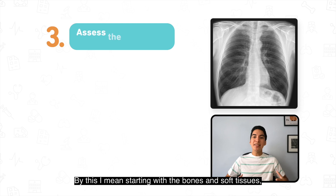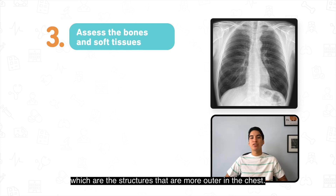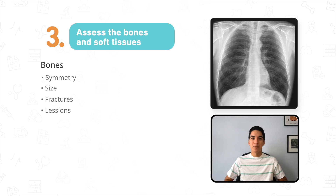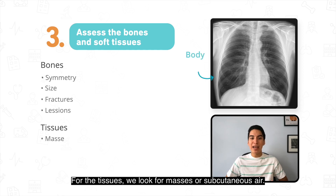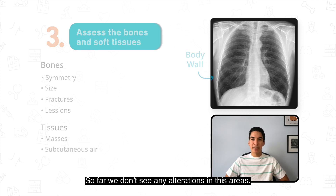After this, I like to start from outwards and go inwards — starting with the bones and soft tissues, which are the structures that are more outer in the chest. We assess the bones for symmetry, size, fractures, and lesions. For the tissues we look for masses or subcutaneous air. So far we don't see any alterations in these areas.